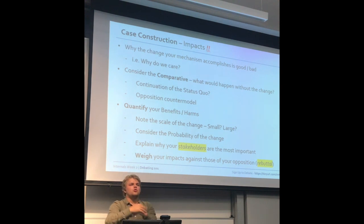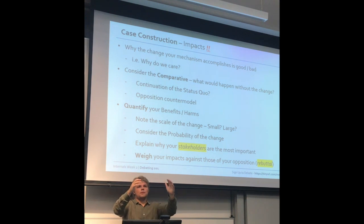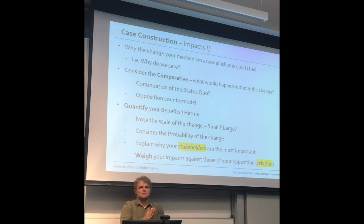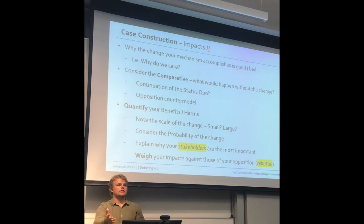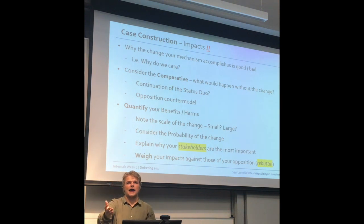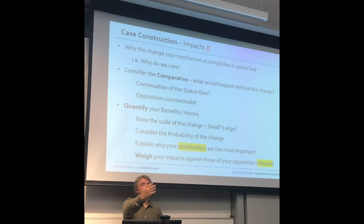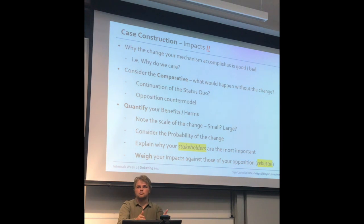In debates you might have a debate about taxing the rich far more. The affirmative might say the most important stakeholder is poor people on government handouts, and the negative team might bizarrely run that Michael Bloomberg is the most important person in the debate. If they do that well, they could hypothetically win. So it's important to explain why the unique stakeholder you're trying to benefit is the most important — that might be for some principled reason, or because they're owed something.